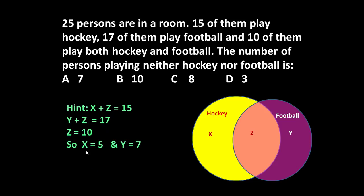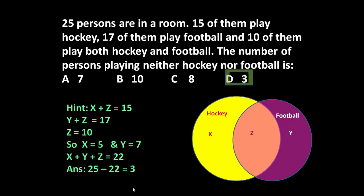Solving these three equations we get X equals 5, Y equals 7, and Z equals 10. So X plus Y plus Z equals 22, meaning 22 students are playing at least one game. Total 25 persons are there, so the number of persons not playing any game is 25 minus 22 equals 3. The answer is 3.